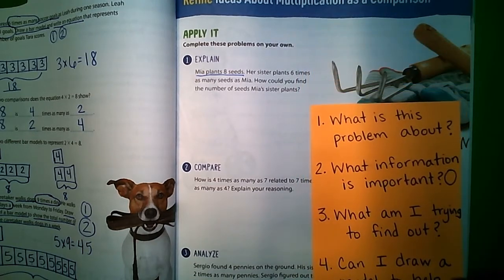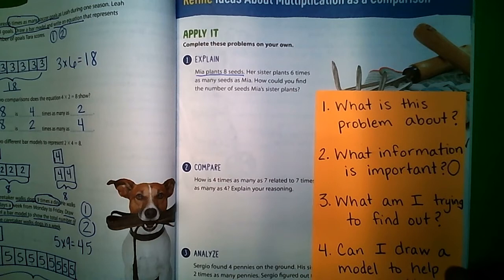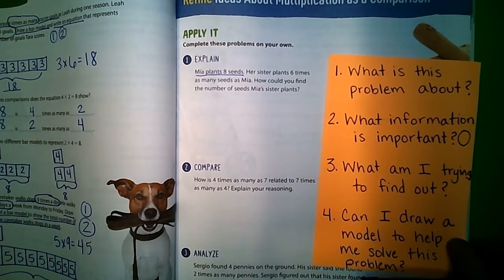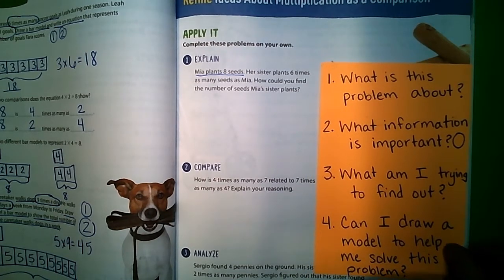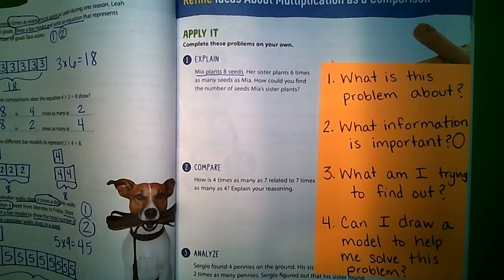It's also a good idea to go ahead and have your index card or your chart that has your questions about it, because these are a lot of word problems. So on number one it says Mia plants eight seeds. Her sister plants six times as many seeds as Mia. How could you find the number of seeds Mia's sister plants?